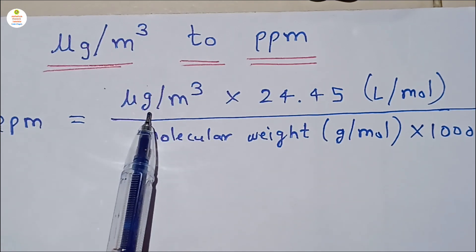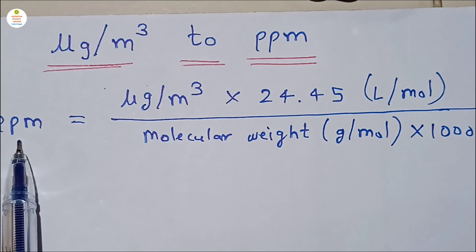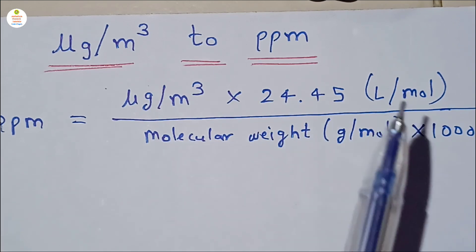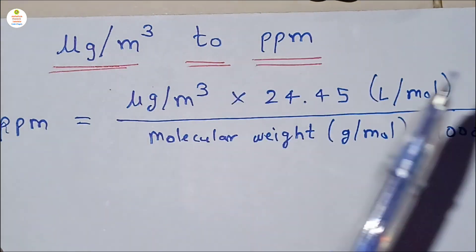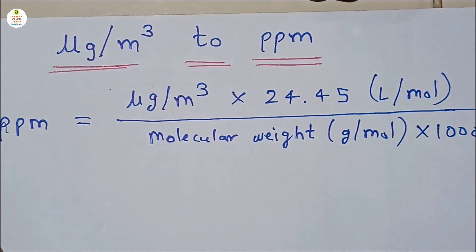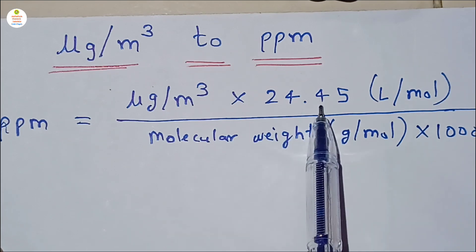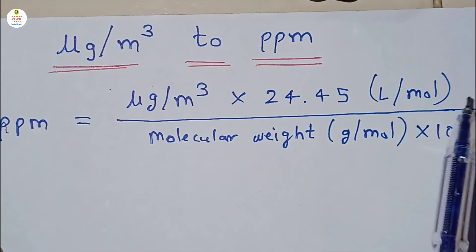Here this 24.45 is the molar volume of an ideal gas at 25 degrees Celsius and 1 atmosphere at that standard conditions. And this value is in liter per mole as you can see here.